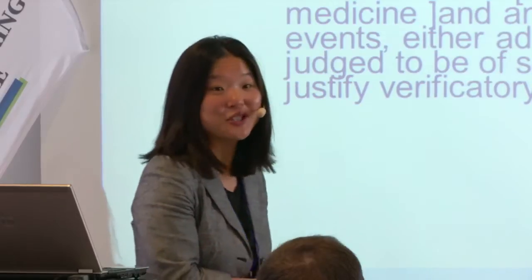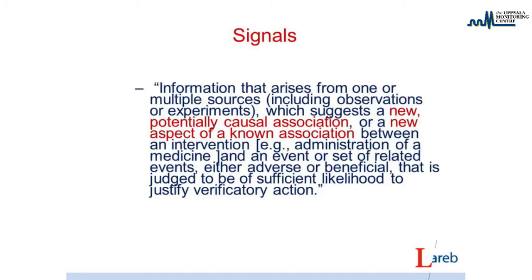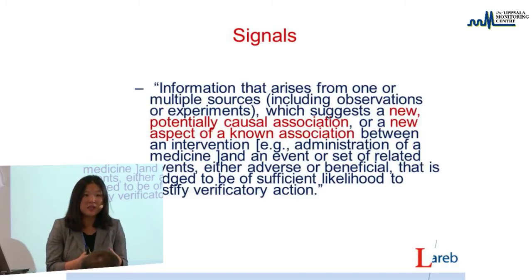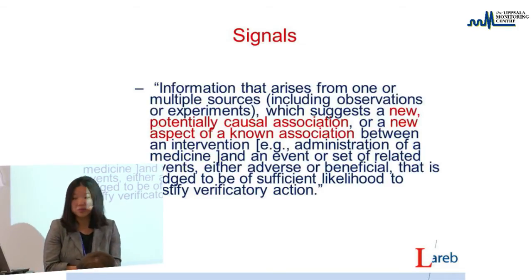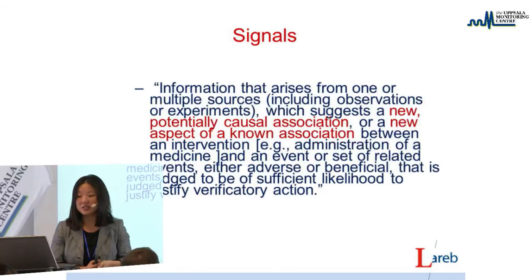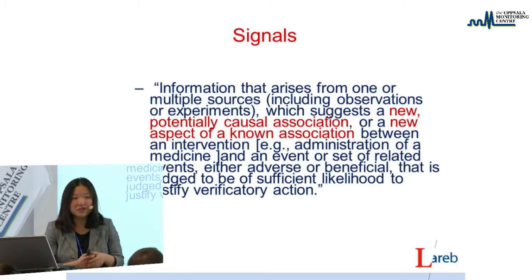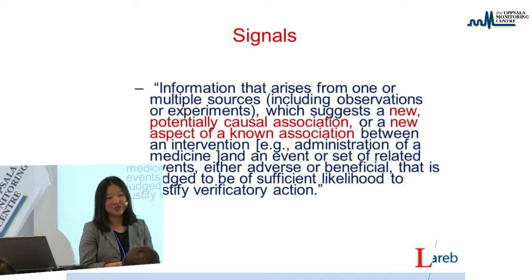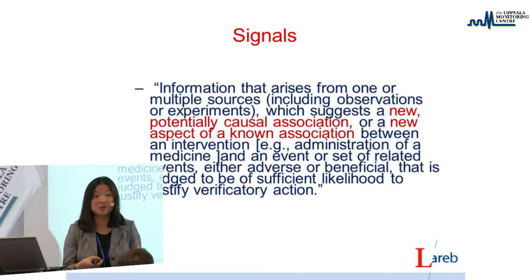One of the aims of pharmacovigilance is to try and find signals. A few years ago we said that a new signal is a new association that was previously unknown. But in recent years, the definition of a signal has been expanded to include much more than the new and unknown. This is a more recent version which the EMA uses - it still has the new potentially causal association, but also a new aspect of a known association.